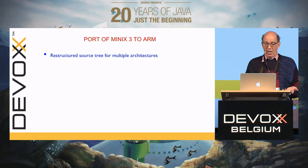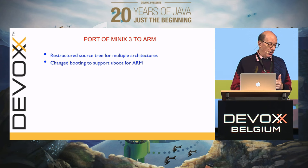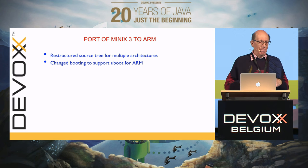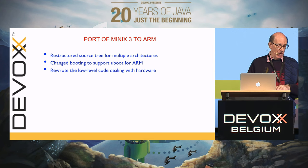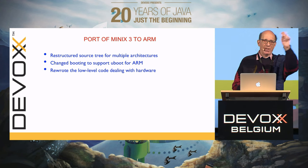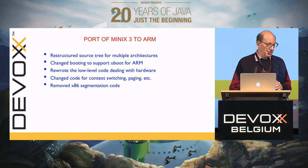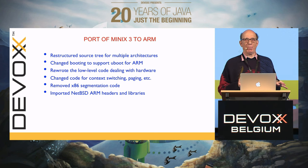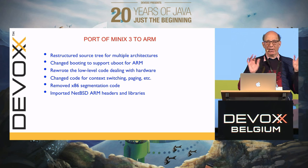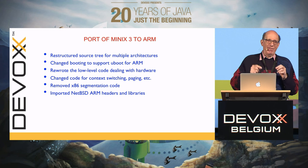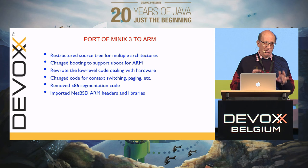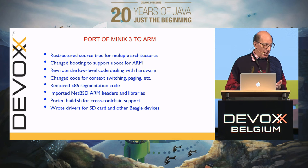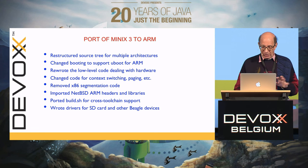At some point we decided to move from x86 to ARM, so we had to restructure the whole source tree for multiple architectures. We changed the booting to support the way ARM boots, rewrote the very low-level code for interrupts and page tables, handled context switching differences, and got rid of the x86 segmentation code nobody used. We also began porting slowly to NetBSD. We had to change the build toolchain and write drivers for BeagleBone board devices.